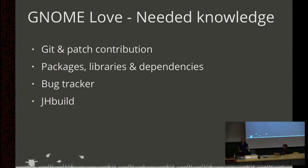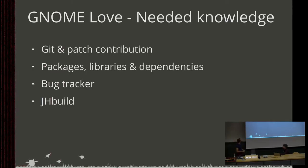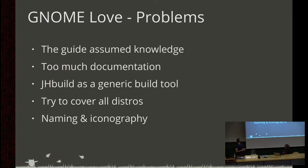Another issue was Bugzilla — we know Bugzilla is not the best UI experience for newcomers or for anyone. It's even hard for me now to search for something in Bugzilla, so we can't tell newcomers to just search for tasks there. Then there's JHBuild, the tool to build the platform — it's a pretty complex tool, and we actually only need a minimal set of its features for the first contribution. So we have to make sure we only explain that minimal part.